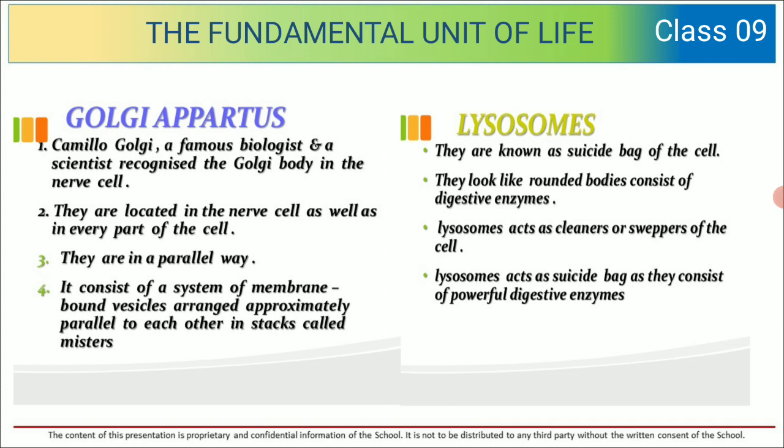Next, we are going to talk about the Golgi apparatus. Camillo Golgi is a famous biologist who recognized the Golgi body in the nerve cell. They are located in the nerve cell as well as every part of the cell. It consists of a system of membrane-bound vesicles arranged approximately parallel to each other.